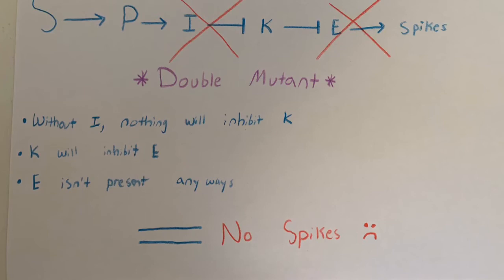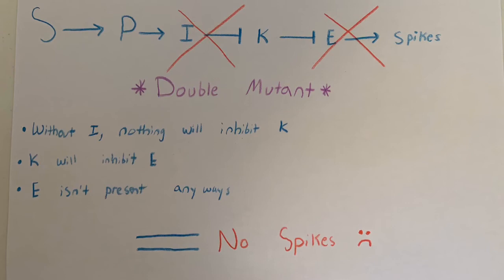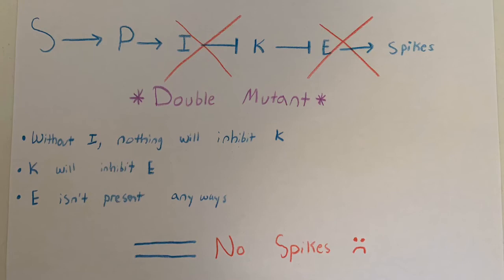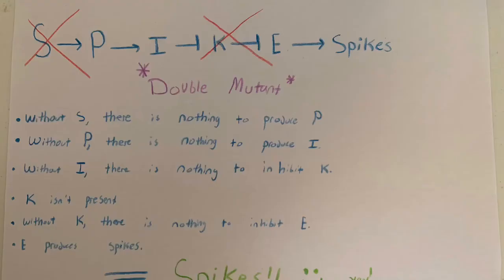In our third mutant, we have I- and E-, which classifies as a double mutant. Without I, nothing will inhibit K. K will inhibit E, but E is already not present, which means no spikes will be formed yet again.